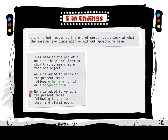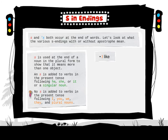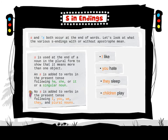No S is added to verbs in the present tense following I, you, we, they, and plural nouns. Examples: I like, you hate, they sleep, children play, boys run.